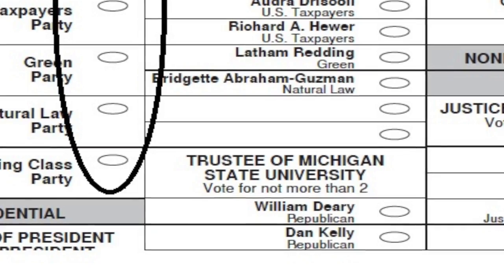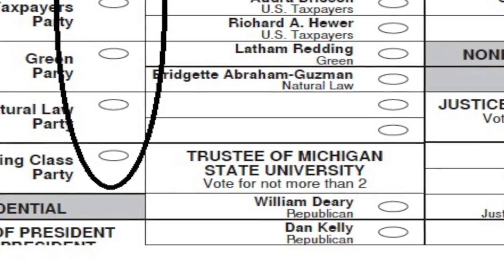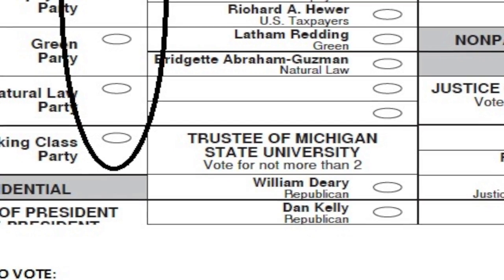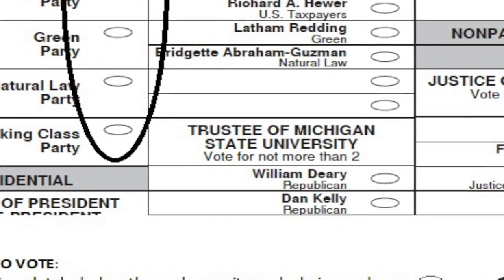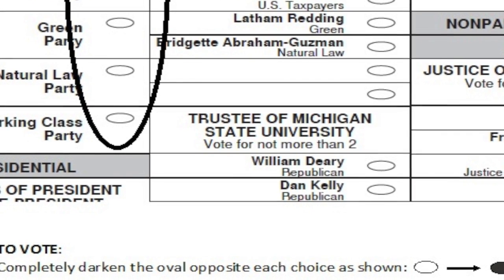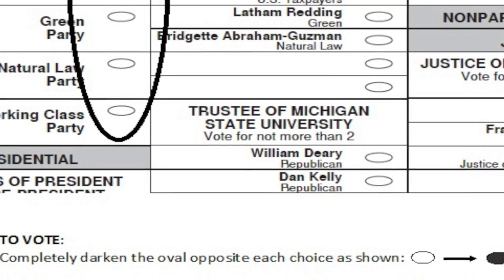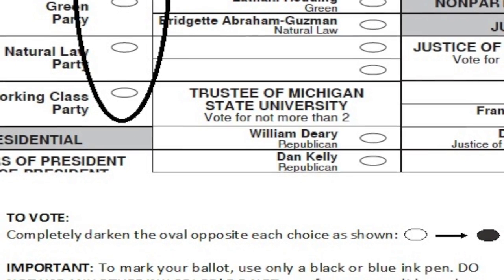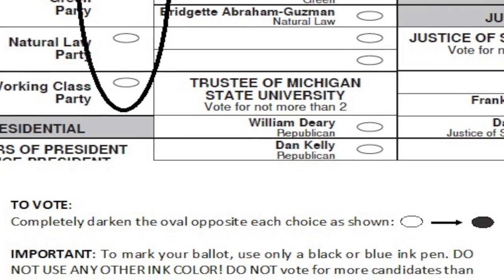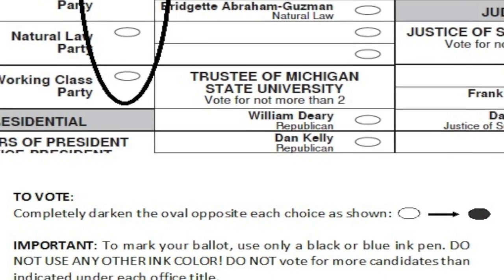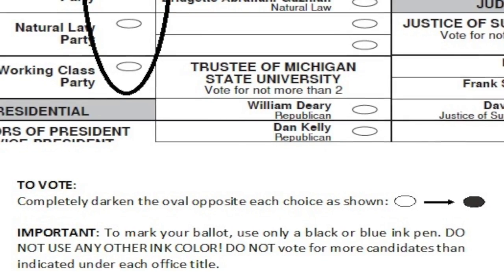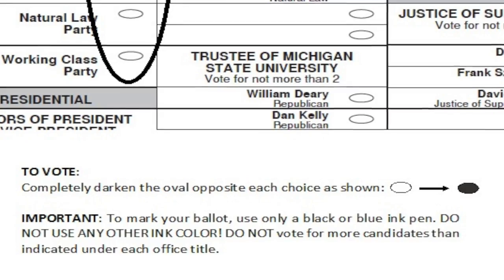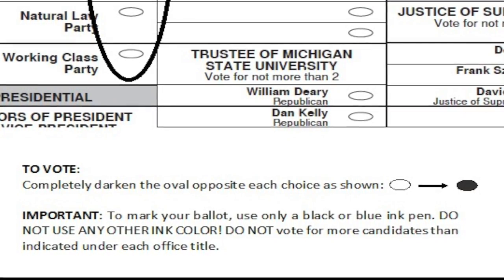To ensure that the votes you cast are properly counted by the tabulator, you need to completely darken the oval that is opposite your choice. If you notice on the ballot, to the right of each candidate or proposal is an oval. To vote for that candidate or proposal you must completely darken that oval. Please only use blue or black ink and do not circle the candidate name or make a check mark next to that person's name thinking that that is a way to cast your vote.